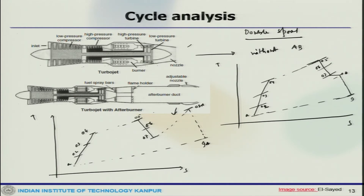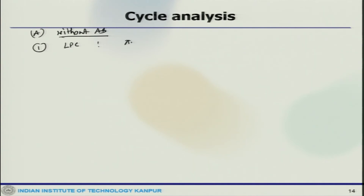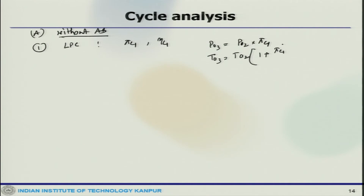For the low pressure compressor (LPC): the pressure ratio is pi_C1 and isentropic efficiency is eta_C1. Then P_03 equals P_02 times pi_C1, and T_03 equals T_02 times (1 plus (pi_C1 to the power (gamma_C minus 1) by gamma_C) minus 1) divided by eta_C1.